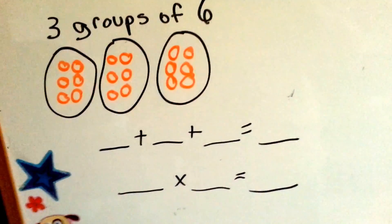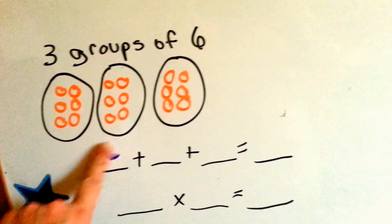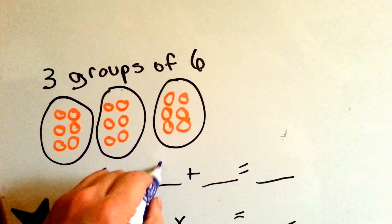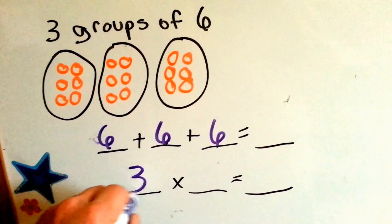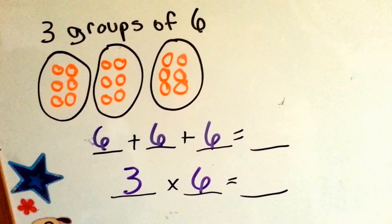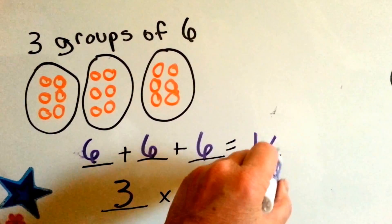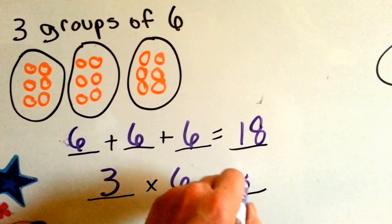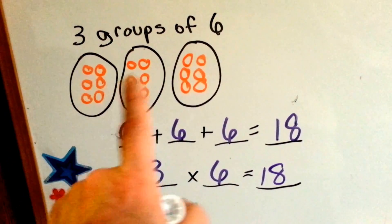Let's try this one. We have 3 groups of 6. That means we have 6 plus 6 plus 6. We have 3 times 6. 6 plus 6 plus 6 is 18. 3 times 6 is 18. So 6 plus 6 plus 6 and 3 times 6 are the same thing.